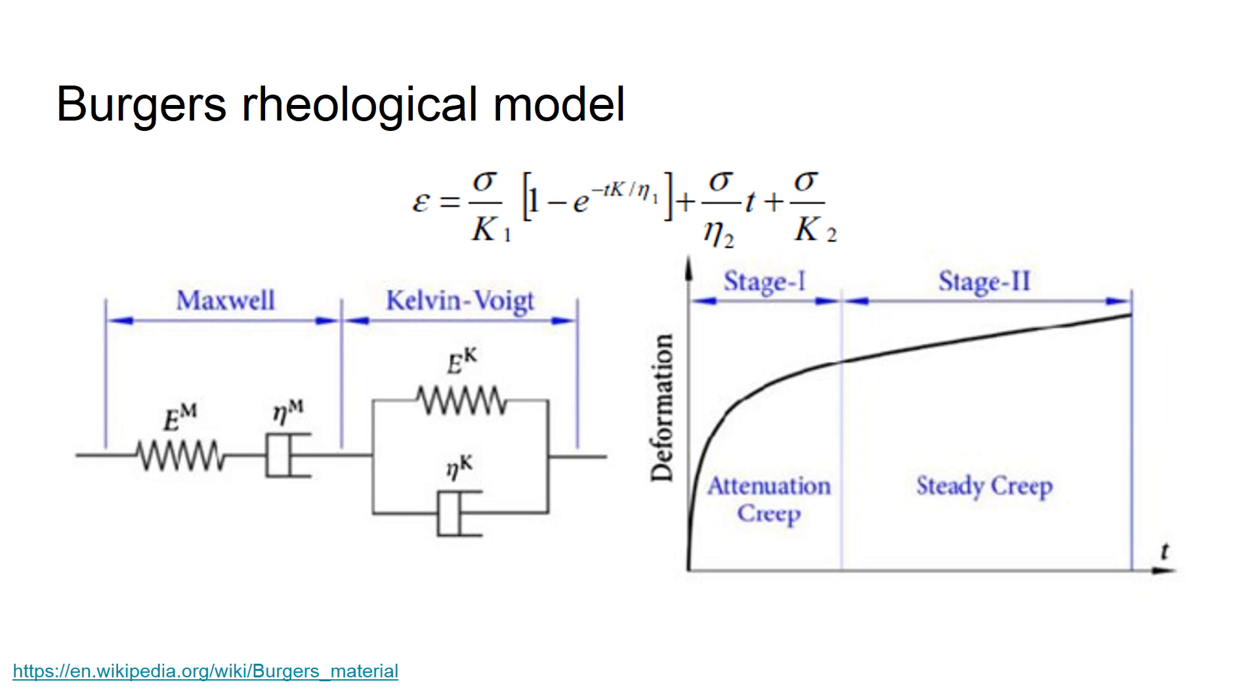Next, combining these two models, Brugge proposed his model and this model was found to be capturing the creep phenomenon more accurately. Another point I would like to add in this slide is that all of you might have guessed correctly that this Maxwell is the same person who proposed the Maxwell equations. And this Kelvin in the second model is the same Lord Kelvin on whose name we have the Kelvin scale of temperature.